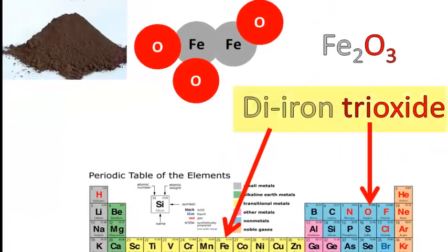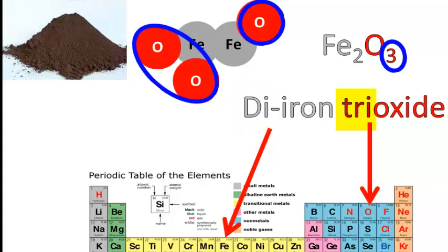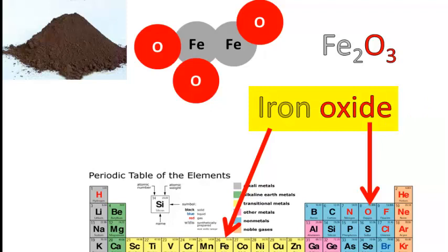We could call this di-iron trioxide. Di- meaning two, two iron atoms bonded to tri- meaning three, three oxygen atoms. Fe2O3. But we can also just say iron oxide and we must just remember that that means Fe2O3.